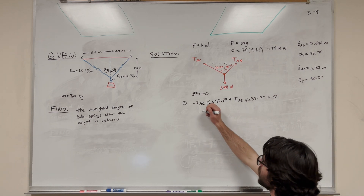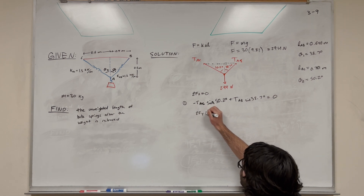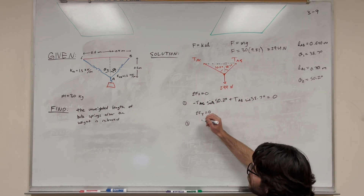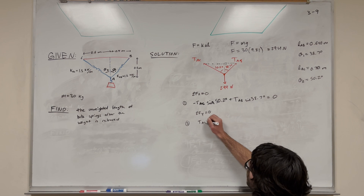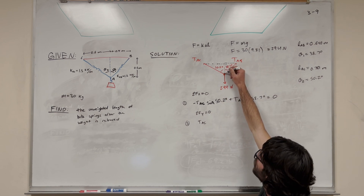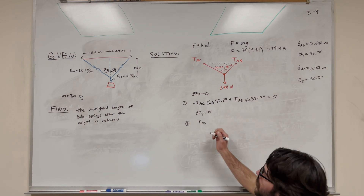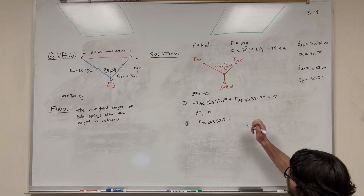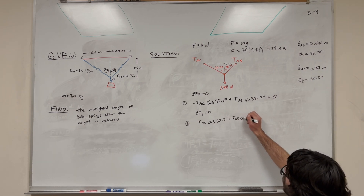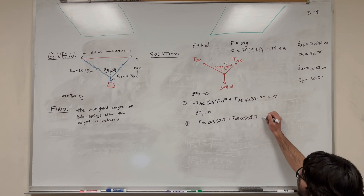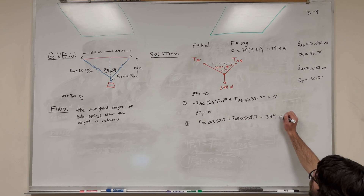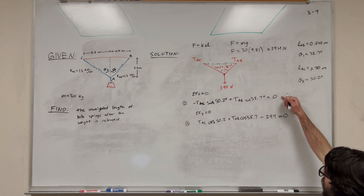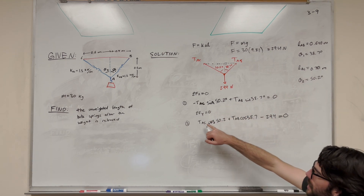So we write our second equation: sum of forces in Y equals zero. Tension AC is going up in the Y direction, and this component is adjacent to the angle, so we use cosine. Tension AC cosine of 50.2 degrees plus tension AB cosine of 38.7 degrees minus 294 newtons equals zero. Now we have a system of two equations and two unknowns: tension AC and tension AB.